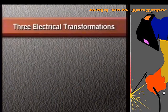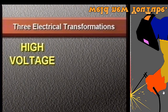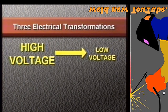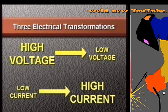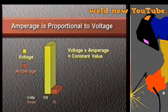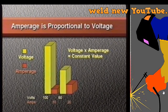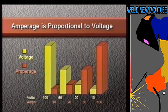Let's take a look at the three electrical transformations that occur inside a traditional arc welder. First, high voltage is reduced to low voltage, both to meet the requirements of the welding process and for safety reasons. Simultaneously, the voltage reduction proportionally increases the current, or amperage, from the much lower current power source. The relationship between voltage and current is simple: a power source of 10 amps at 100 volts can be converted to 20 amps at 50 volts, or 50 amps at 20 volts, or 100 amps at 10 volts, given the right electrical devices.